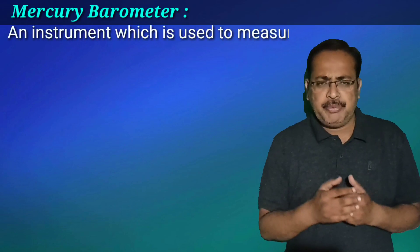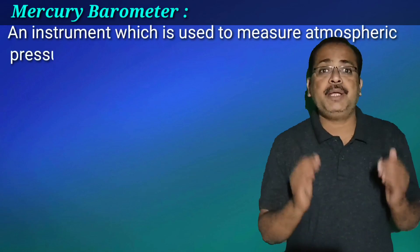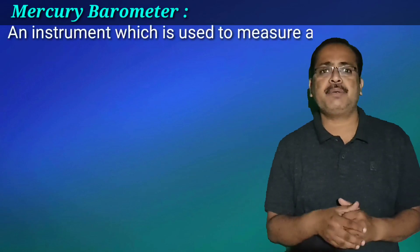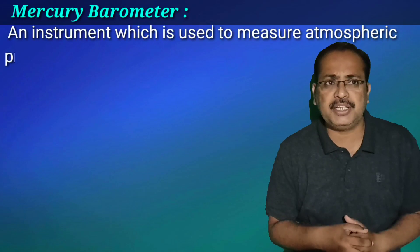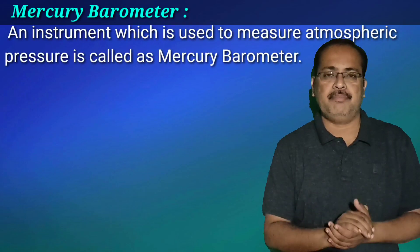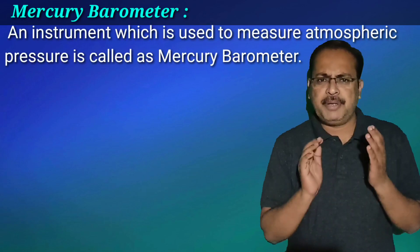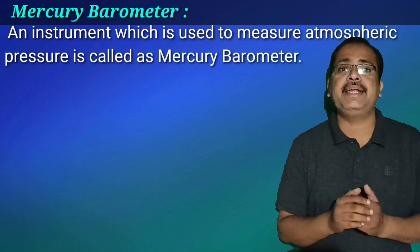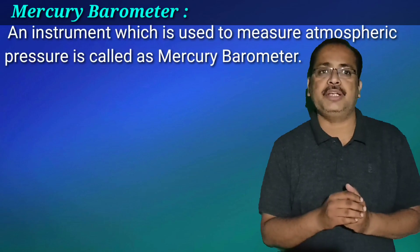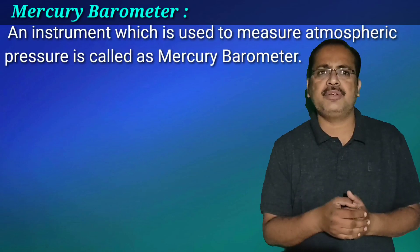An instrument which is used to measure atmospheric pressure is called a mercury barometer. One of the best barometers was designed by the Italian scientist Torricelli, and therefore it is also called the Torricelli barometer.